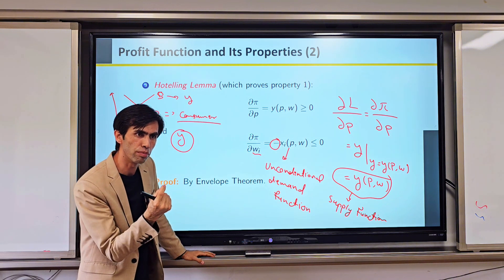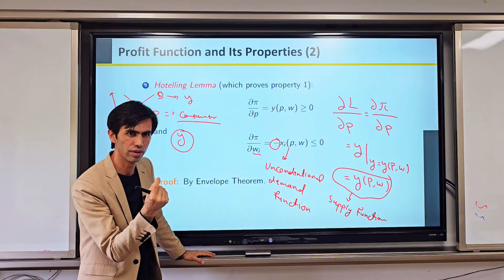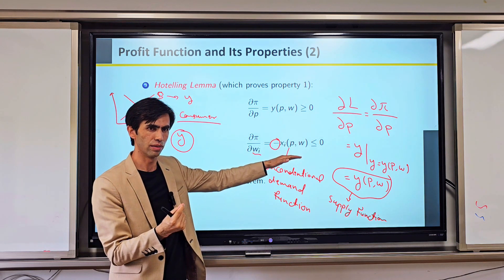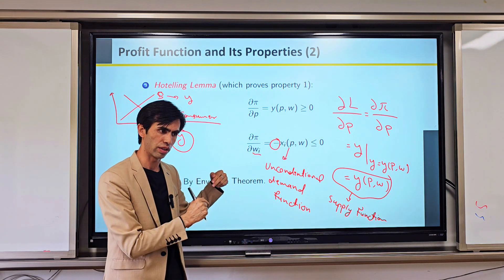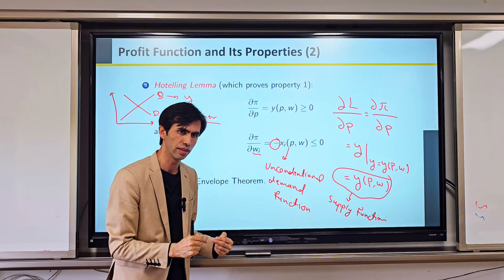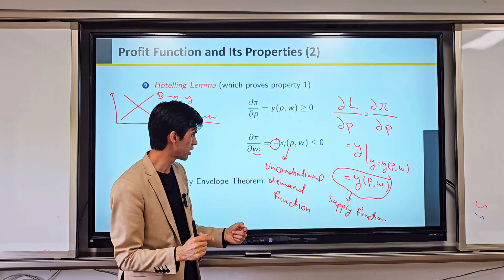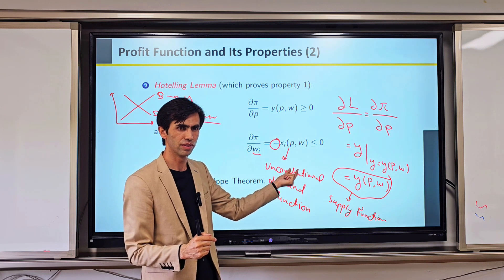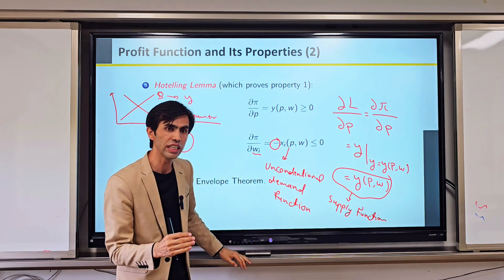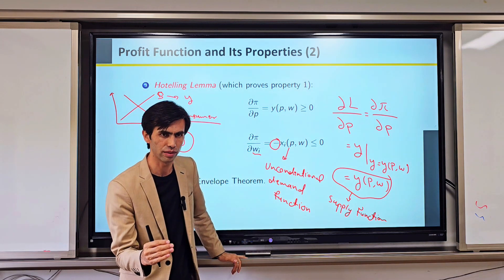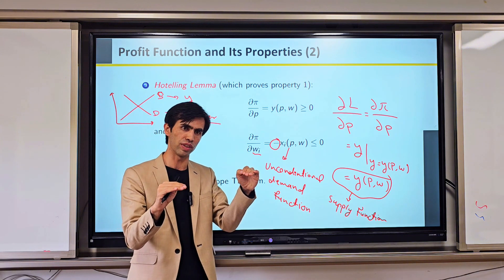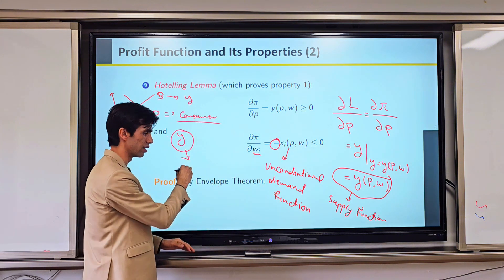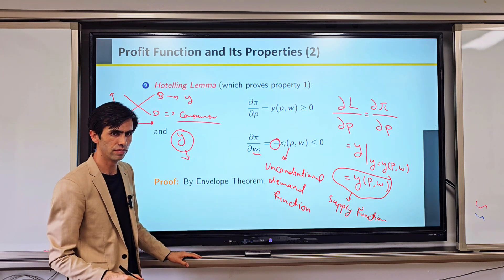Because we need to maximize our output, we don't focus on how much the price is. In a perfectly competitive market, input prices and output prices are given, so we don't need to worry much about them — we just need to adjust ourselves to those prices. What we should adjust is our output level.